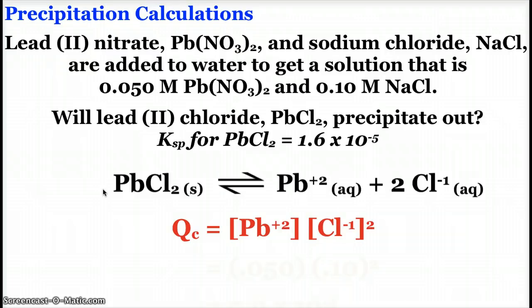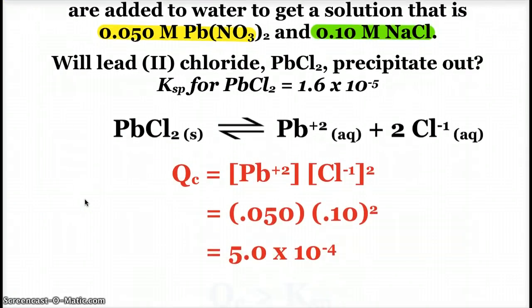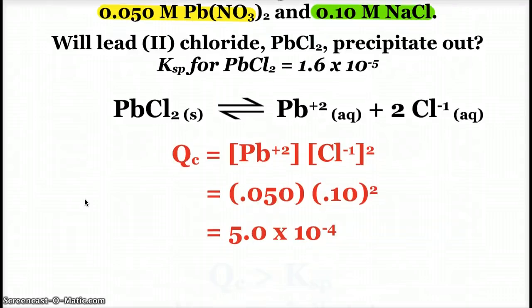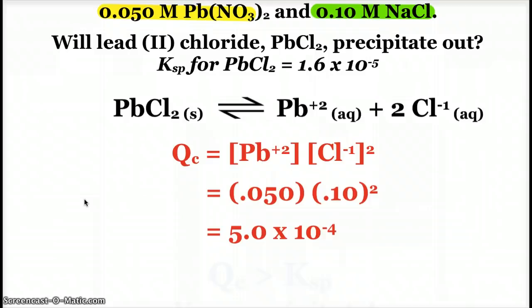And when we look up at our problem, we can see that we are given our concentrations, because 0.05 molar lead nitrate will mean I have 0.05 molar of my lead ion, and 0.1 molar sodium chloride would mean that I have 0.1 molar chloride. So I simply have to plug those values into my expression, and when I do that, I see that Qc is equal to 5 times 10 to the negative 4th.